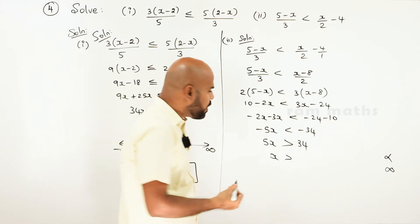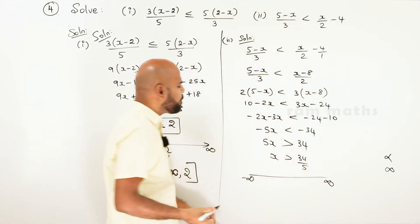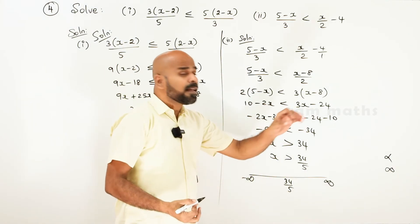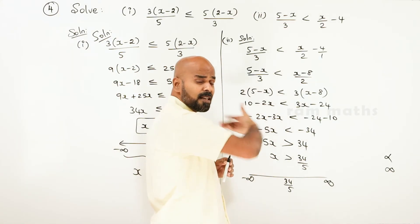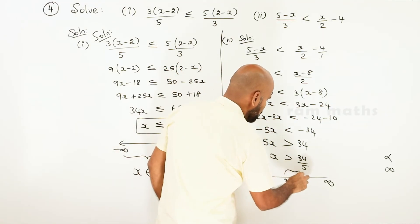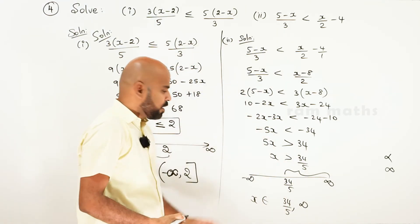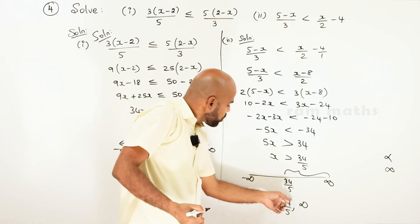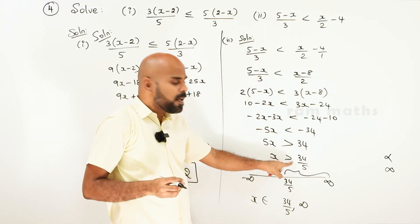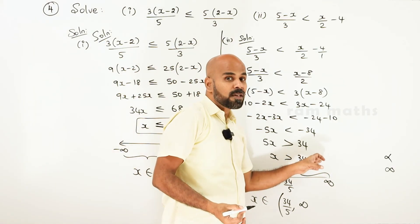Minus 5x greater than 34; divide by 5: 34 by 5. x greater than 34 by 5. x belongs to 34 by 5 to infinity. Left to right interval — this particular number: open interval or close interval depends on the question, equal to means include. Open interval for infinity — infinity is always open interval.